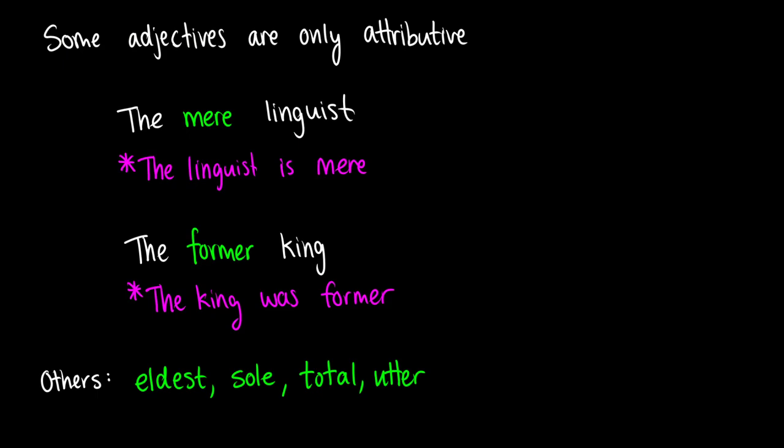Now there's some interesting things in English. For instance some adjectives are only attributive. And I have some examples here. So for instance the word mere. Mere is something like oh you're just that. That's it. So like the mere linguist. Oh like just like an unimportant pathetic little linguist. So we can use it in the attributive position. So remember this is where the adjective occurs right before the noun. But we cannot use this in a predicative position. So we cannot say the linguist is mere. That is an ungrammatical sentence in English. Words like former work the same way. So we can say the former king but we cannot say the king was former.